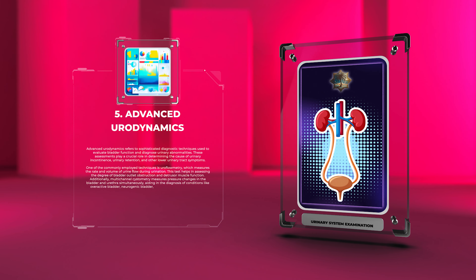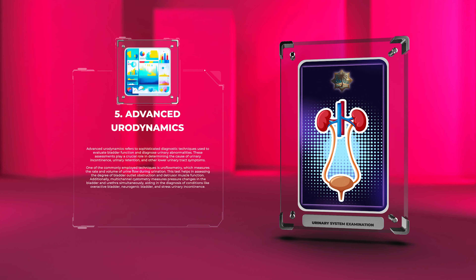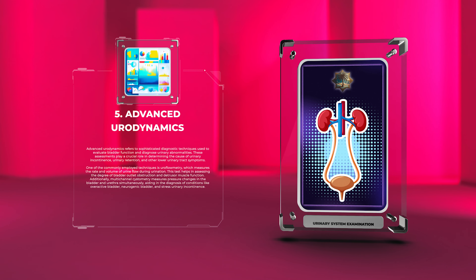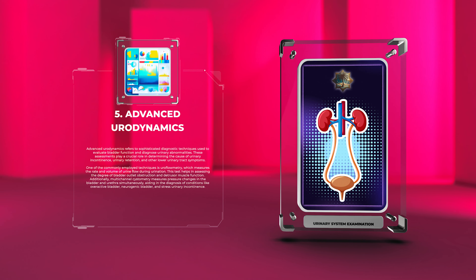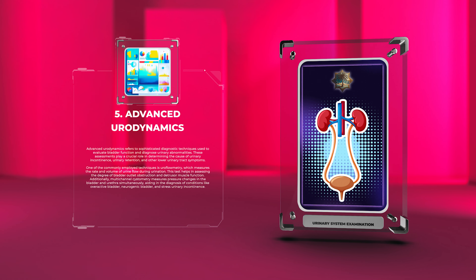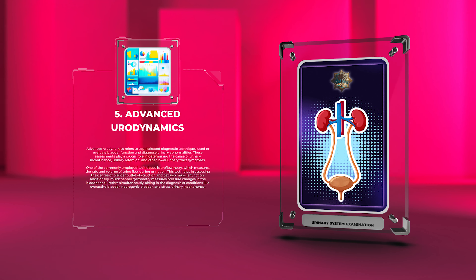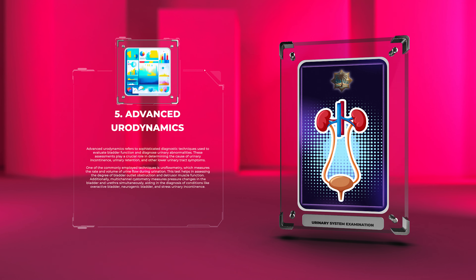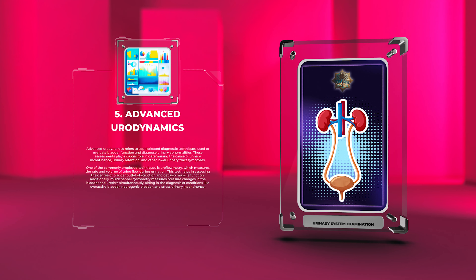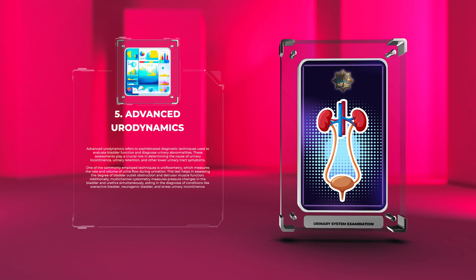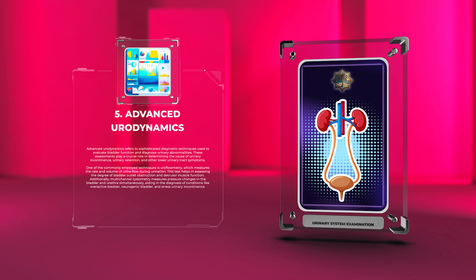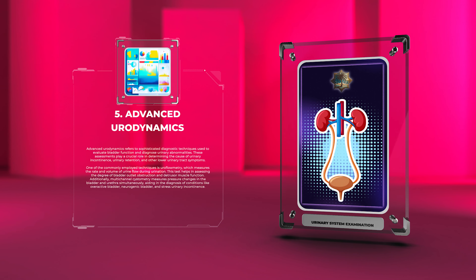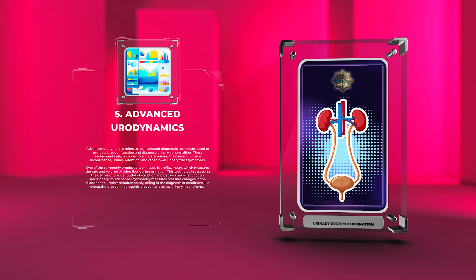Advanced urodynamics refers to sophisticated diagnostic techniques used to evaluate bladder function and diagnose urinary abnormalities. These assessments play a crucial role in determining the cause of urinary incontinence, urinary retention, and other lower urinary tract symptoms. One commonly employed technique is uroflowmetry, which measures the rate and volume of urine flow during urination, helping assess the degree of bladder outlet obstruction and detrusor muscle function.